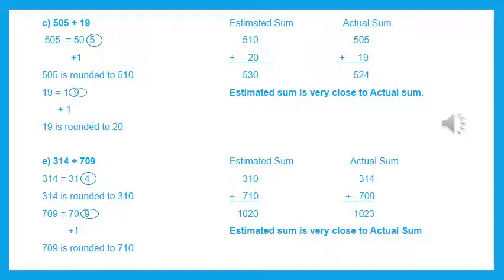Now the E part: 314 plus 709. For 314, the 1's place is 4 — less than 5, so we don't add 1. Just make the 4 a 0, so 314 is rounded to 310. For 709, the 1's place is 9, greater than 5, so we add 1 to the 10's place: 0 becomes 1 and 9 becomes 0. So 709 is rounded to 710.